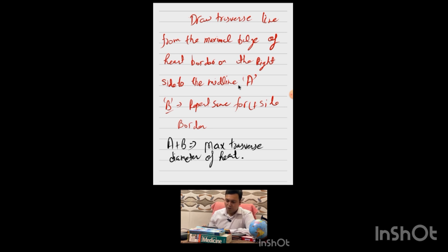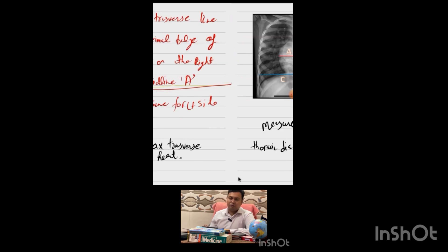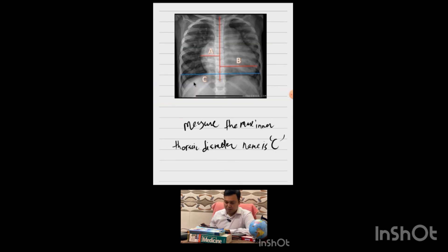So, A is the distance from the maximal bulge of the right heart border to the midline, and B is the same measurement repeated from the left heart border. A plus B gives the maximum transverse diameter of the heart. We then measure the maximum inner thoracic diameter, which we call C.